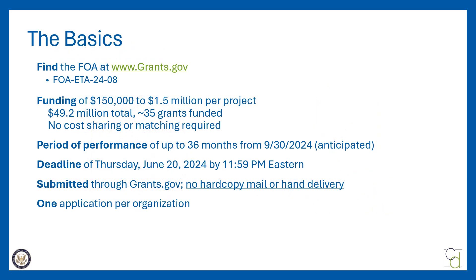Just a few things on the basics. The FOA can be found at www.grants.gov — it is FOA ETA 2408. This round there's a total of $49.2 million spread across the Appalachian, Delta, and Northern Border regions, with Department of Labor estimating up to 35 grants funded. Applicants may apply for a minimum award of $150,000 up to $1.5 million per project. WORK does not require cost sharing or matching. The period of performance is up to 36 months, anticipated to begin on September 30th, 2024.